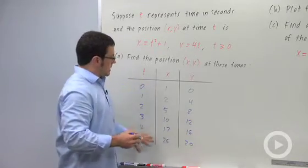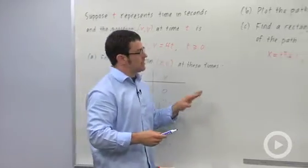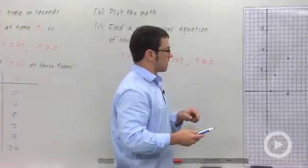So now I have a list of points, and I can plot these points and get some idea of what the path looks like, and that's the next thing I have to do.